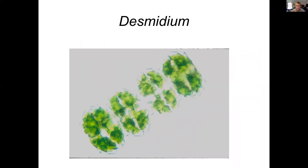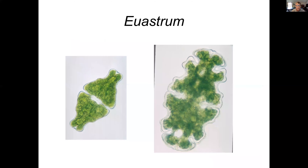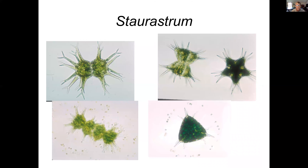Desmidium is a series of connected cells. Cosmarium is probably the simplest one. Xanthidium shows a bit more variation in the outline of the cell — all of these features give you keys to what the genus is. Staurastrum is another desmid green alga, and you can see all these have that nice grassy green color, which will look different from cyanobacteria.